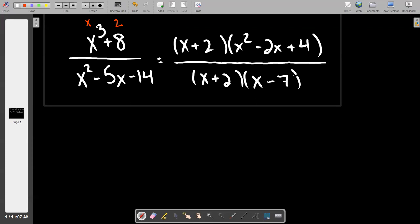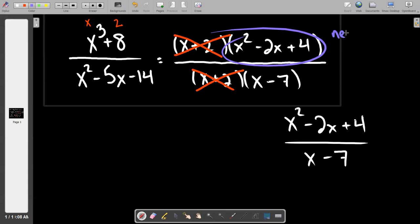The idea is now I have the top is one thing times another thing and the bottom is one thing times another thing. If one of those things in its entirety has a duplicate above or below, then they can cancel. The x plus 2 in its entirety can cancel this x plus 2 in its entirety, leaving us with a final answer of (x² - 2x + 4)/(x - 7). The reason I don't break up the top more is because long set is prime.